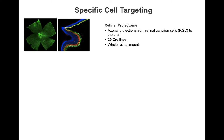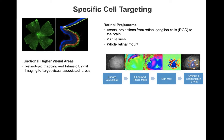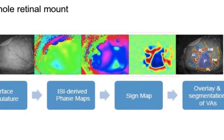As the Allen Institute started concentrating on regions within the visual cortex, they had to target higher visual areas using functional maps instead of stereotaxically. Experiments that targeted injection sites with intrinsic signal imaging include the sign maps in the online interface.